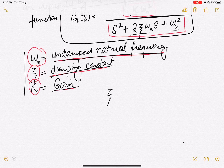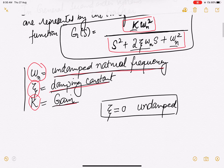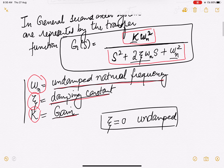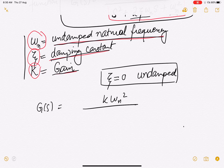A value of ζ equal to zero will ensure that the response is undamped — there is no damping, and we will see why this happens. If we put ζ=0 in the transfer function we get G(s) = k·ωn² / (s² + ωn²).